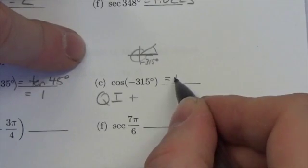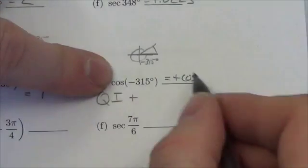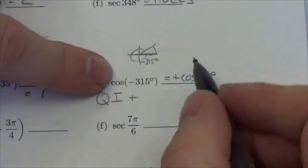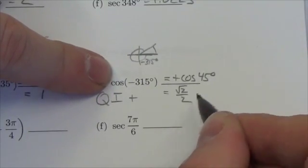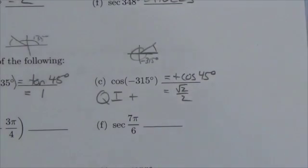the positive cosine of, well what's the reference angle? Well, the difference between those two is 45 degrees. Okay, so now the cosine of 45 degrees is going to be root 2 over 2, and positive because I am in quadrant 1. So positive root 2 over 2.